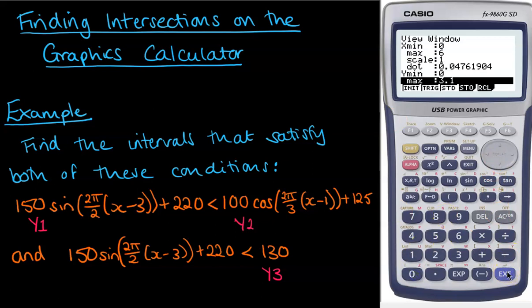The maximum needs to go to the highest point that either of our two graphs could be. Now the highest point on the left-hand side, this is looking like it's going to be our biggest graph. The 220 gives us the middle line and then it can go 150 above that, so we need to go to at least 370. I'm going to put 400 on here just to round that off.